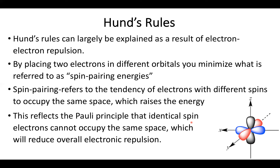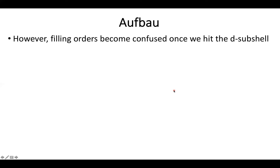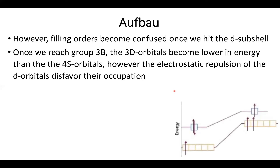This general rule works well for s and p orbitals. However, electron filling gets a little bit messy once we hit the d shell — it's the reason we have an entire class called inorganic chemistry, which is going to focus on the antics of the d shell. Let's talk about what happens when we hit the 3d orbitals, starting with group 3 — scandium — where I've got two electrons in the 4s orbitals and one electron in the 3d orbitals. According to Z-effective, the 4s orbitals should be lower in energy than the 3d orbitals.